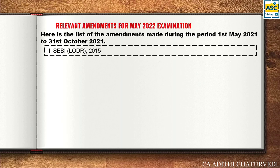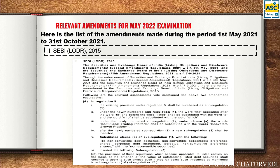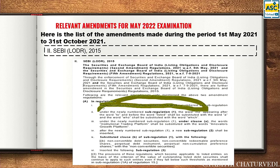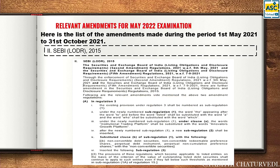Next amendment: SEBI LODR Regulations. Half the amendments are grammar — pure grammar — so don't take tension about those. In the first amendment, existing Regulation 3 shall be renumbered as Sub-regulation 1. The word 'though' and 'listed' shall be substituted with 'a', and 'who' shall be substituted with 'which'. Also, online trading platform is now called Innovators Growth Platform.